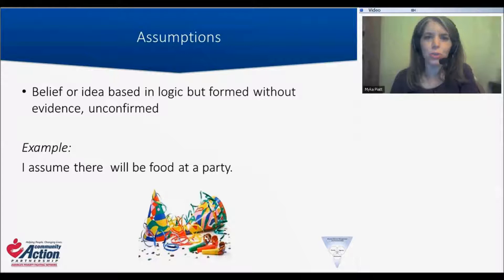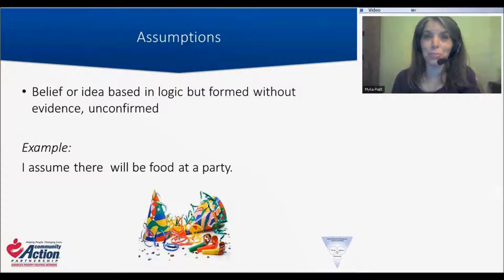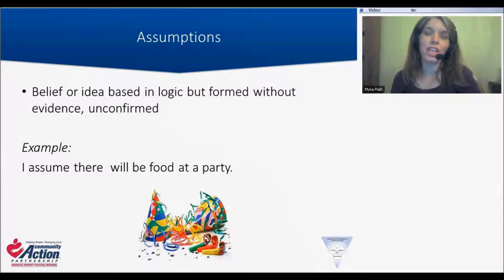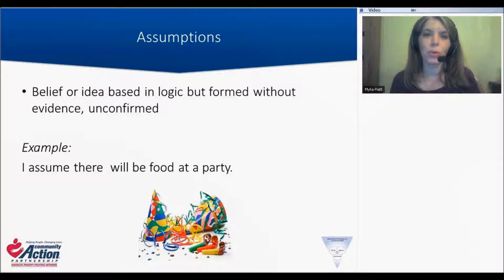For example, when we are invited to a party, we generally would assume that there's going to be food there. Even if somebody doesn't specifically say what food they're going to have, we believe there will be food there — that's a logical assumption. But sometimes we might be wrong, and so we show up and then we would be hungry. Part of the concept of an assumption is that sometimes they're wrong. And another important concept is that two different people can have two different assumptions that they're bringing to the situation, and if we don't express those, we're not aware of that difference in perspective.